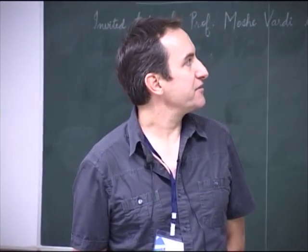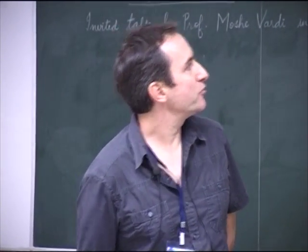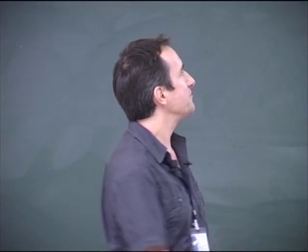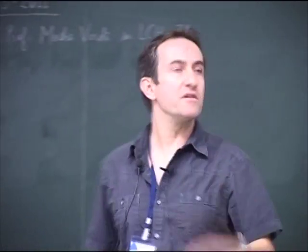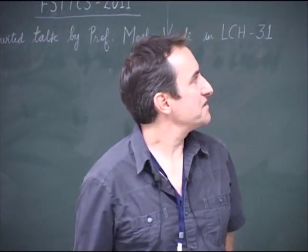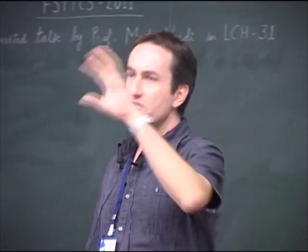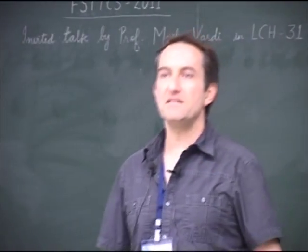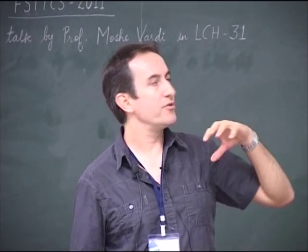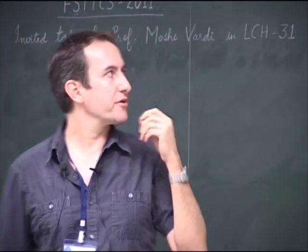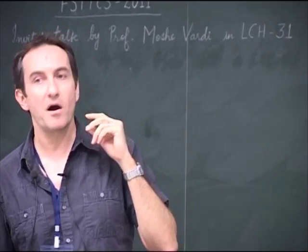A Petri Net is a set of places — here we have P0, P1, and P2. There are transitions: T1, T2, T3, and TS. There are tokens on the places. The set of tokens on each place forms a marking. Each marking of the Petri Net is composed of a number of tokens in each place.